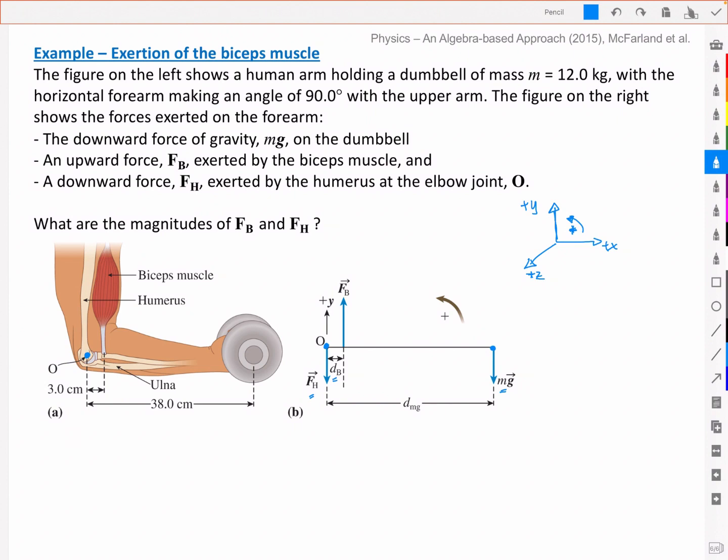No forces in the x-direction or no x-components, and I only then have the y-components. And so my y-components here are the upward or positive force of the biceps, the downward or negative force of the humerus, and the downward or negative force of mg due to the weight of the dumbbell in the hand. And all of that is going to be set equal to zero.